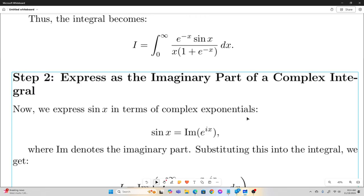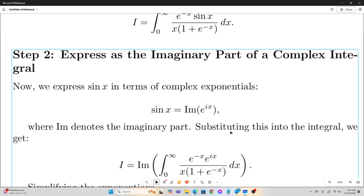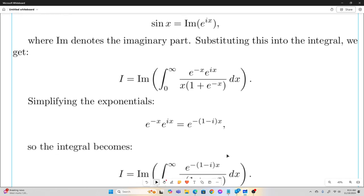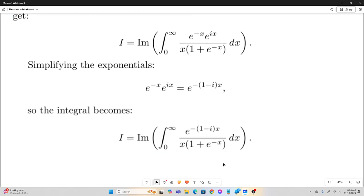Next we're going to express sine x as the imaginary part of e to the ix. Substituting that in we have that I is equal to the imaginary part of this integral right here. And then we'll notice that e to the negative x times e to the ix is just e to the negative quantity 1 minus i times x. So our integral becomes this right here.